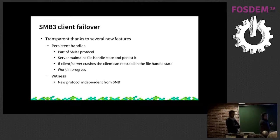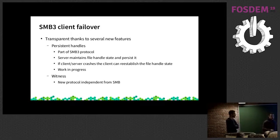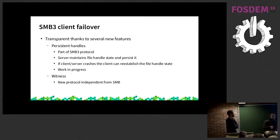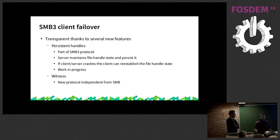One new SMB3 feature is the witness service, and another is persistent handles. With persistent handles, when the client opens a file on a server, the server stores the file handle state — information about leases, share modes, and locks. Before persistent handles, if the server crashed this information was lost, but with persistent handles, this file handle state is persisted. When the client reconnects, it can request the server to reuse the file handle state. In a cluster environment, this file handle state is also synchronized across the cluster, so a client can open a file on another node in the same state.